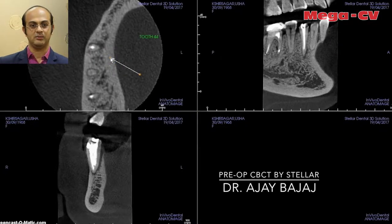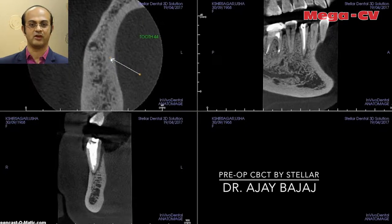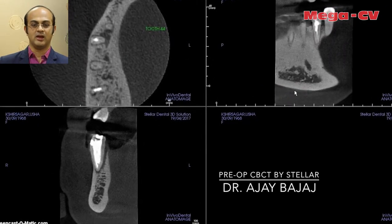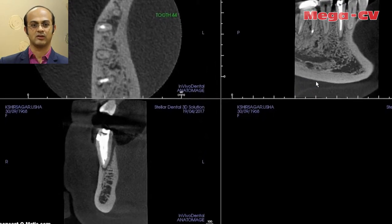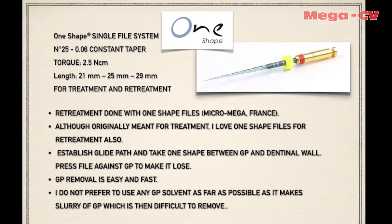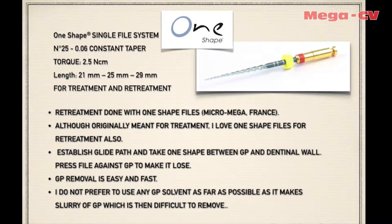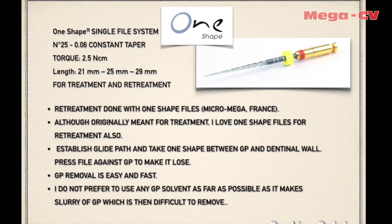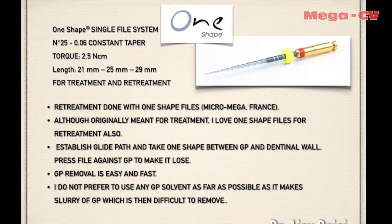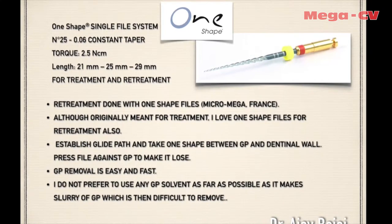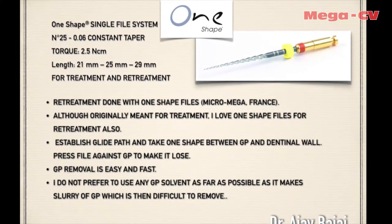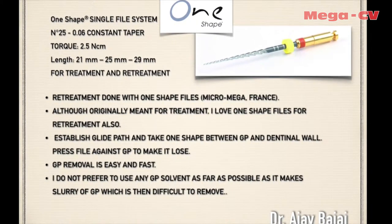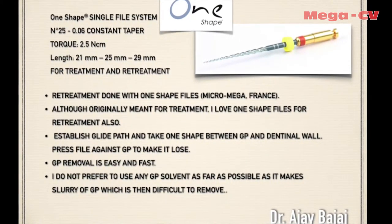For retreatment I decided to use my favorite file — One Shape — a single file system. It is a 25/06 constant taper file. The torque I use is 2.5 Newton centimeters. It is available in 21 mm, 25 mm, and 29 mm lengths. My preference is mainly for retreatment, as the next generation file called One Curve is available for primary treatment.